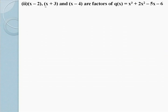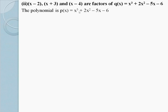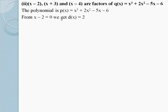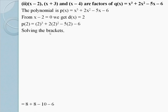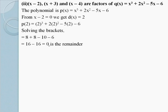Part 2: Check if x - 2, x + 3, and x - 4 are factors of Q(x) = x³ + 2x² - 5x - 6. From x - 2 = 0, we get x = 2. P(2) = 2³ + 2(2)² - 5(2) - 6. Solving: 8 + 8 - 10 - 6 = 16 - 16 = 0. Since r = 0, therefore x - 2 is a factor of the polynomial.